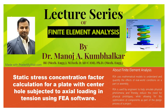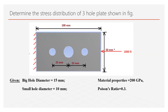In today's lecture, we are going to discuss about the practical on ANSYS software for the plate with hole. This is the given problem having a plate with dimensions 100 mm by 50 mm with a hole at center and also beside. The diameter of the hole at the center is 15 mm and the diameter of the holes beside the center hole is 10 mm. The load applied over the plate is 1000 Newton, and the material properties given are Young's modulus equals 200 giga Pascal and Poisson's ratio is 0.3, which is nothing but the property of structural steel.